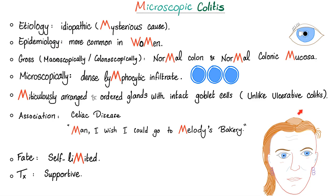Epidemiologically, it's more common in women. Grossly — meaning macroscopically, colonoscopically by your naked eye — you see a normal colon with normal mucosa. But microscopically, you have dense lymphocytic infiltrates, which gives you a hint that this disease is more chronic rather than acute.